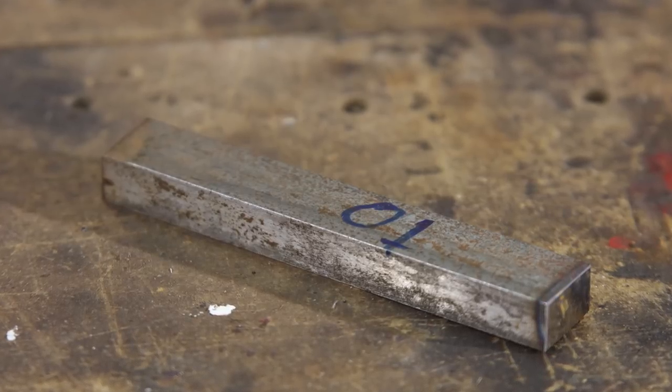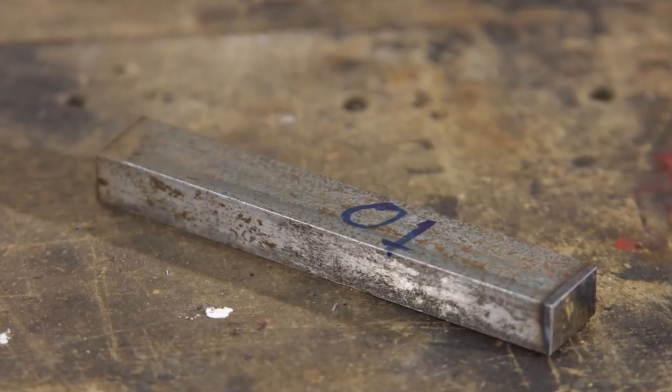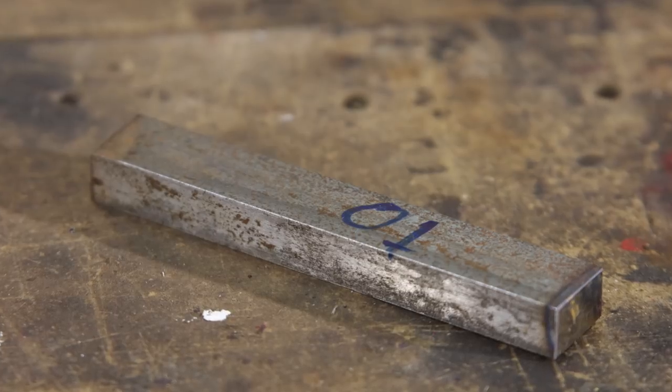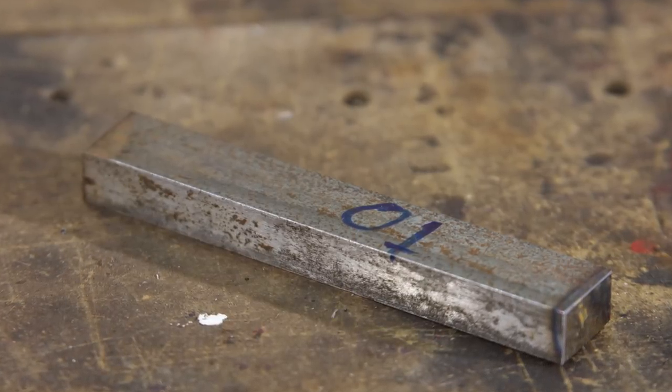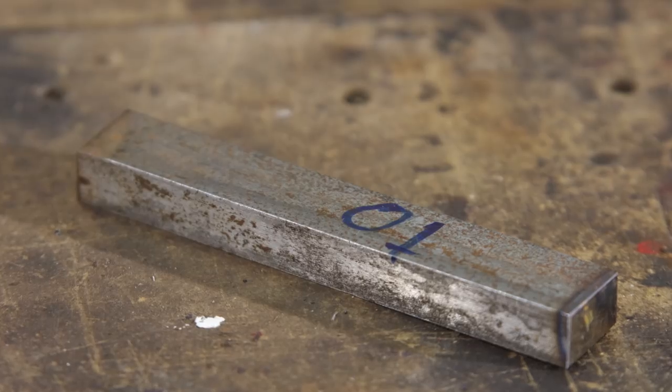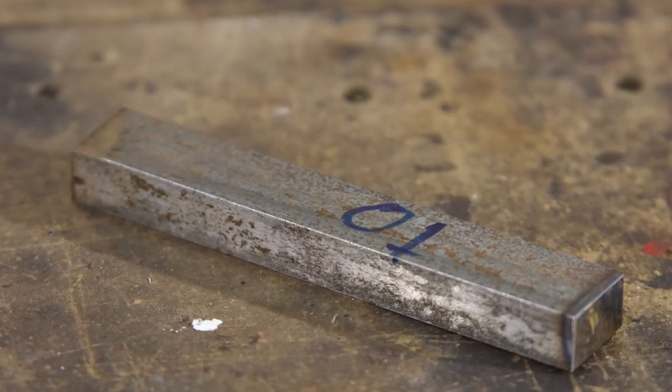I'm using a piece of 1 inch by 5 eighths inch O1 steel. You can buy O1 steel online and heat treat it fairly easily. But if you want to go even simpler, you can use mild steel, which is way cheaper, and which you can find almost anywhere. Now it won't last as long, but you'll still be able to make quite a few knives before you wear out your tool.